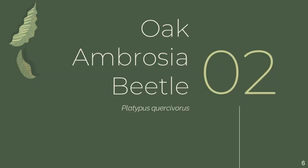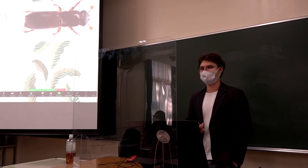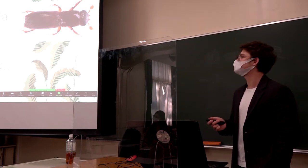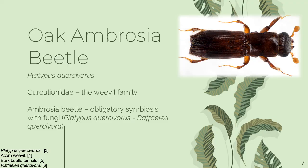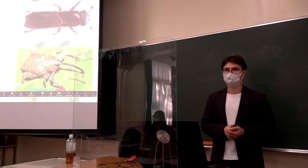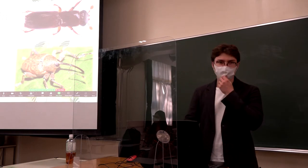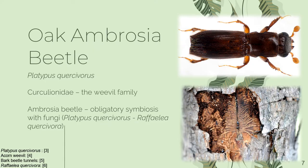Now let's look at the oak ambrosia beetle, Platypus quercivorus — literally meaning 'oak eating.' It belongs to the weevil family, and the weevil family comprises many insects, the majority of which are tree pests and parasites. One of the best known insects from the weevil family is the bark beetle, which is responsible for a lot of damage in forests, creating tunnels under the bark and damaging both the tree and the timber.